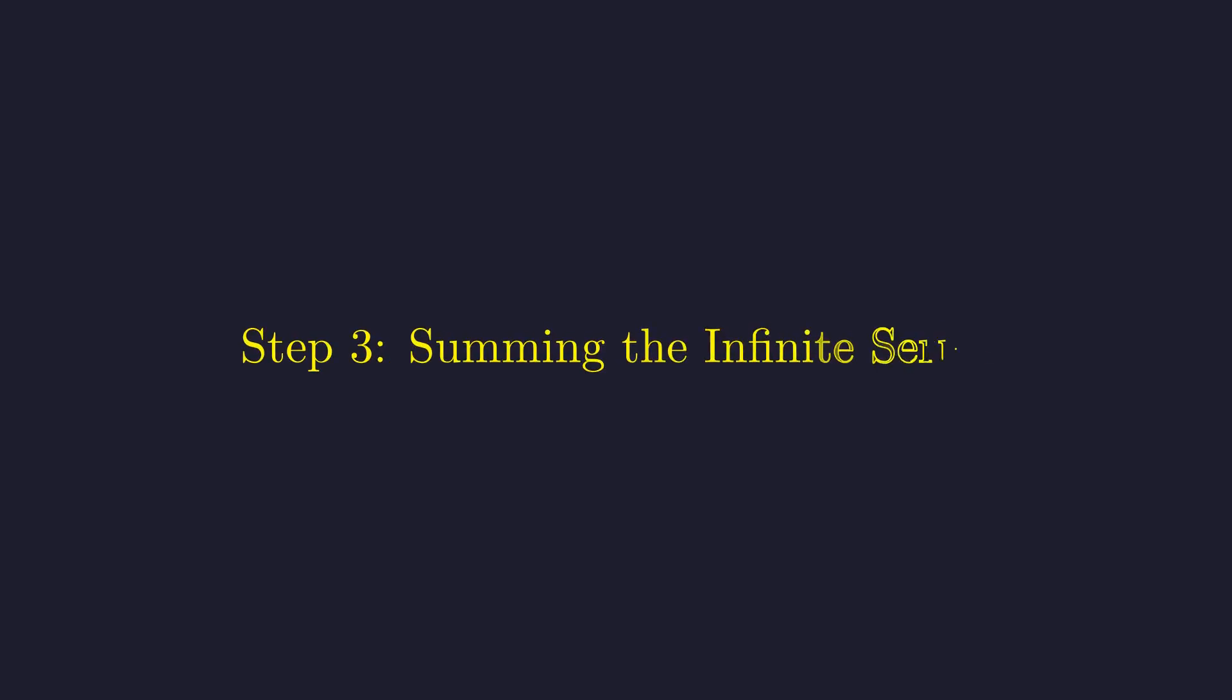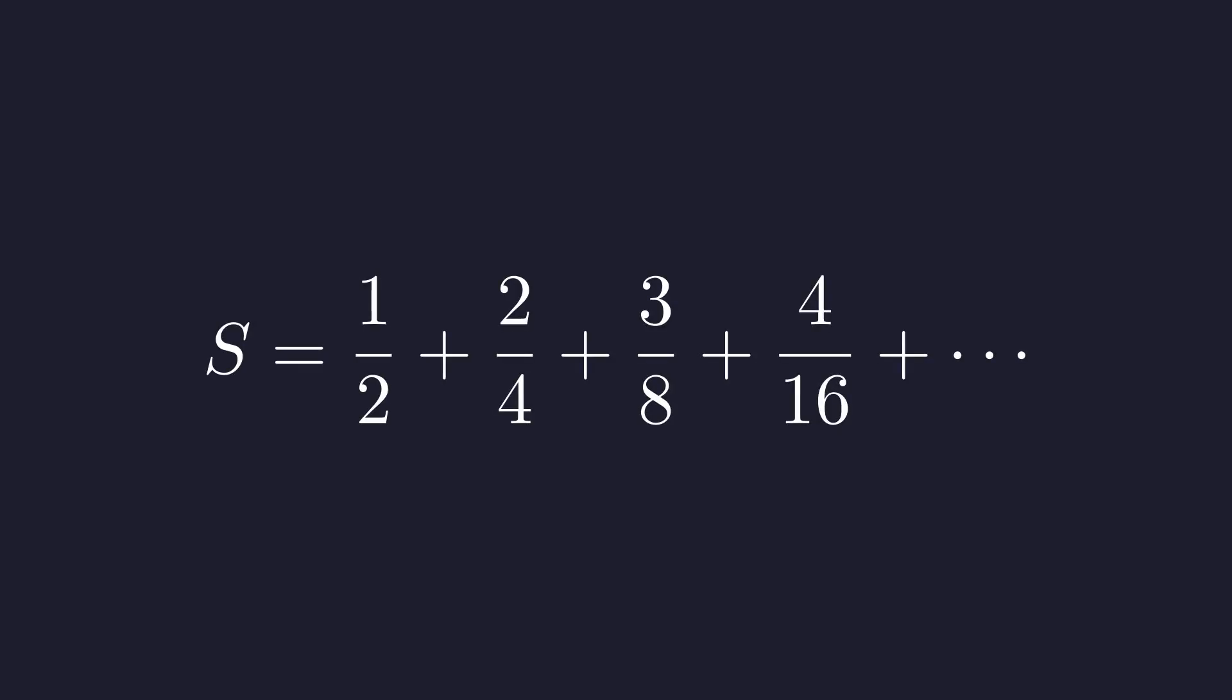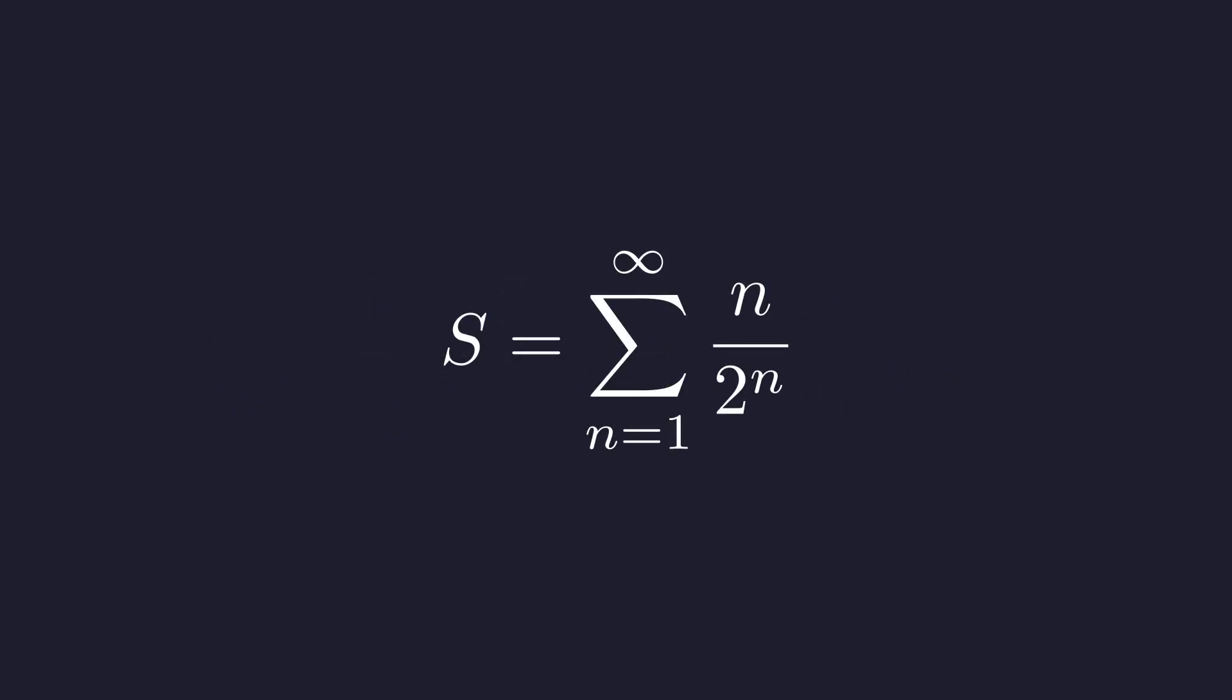Now let's figure out what this infinite series sums to. Let's call this sum s. This is what's called an arithmetico-geometric series. In sigma notation, it's the sum from n equals 1 to infinity of n over 2 to the n.